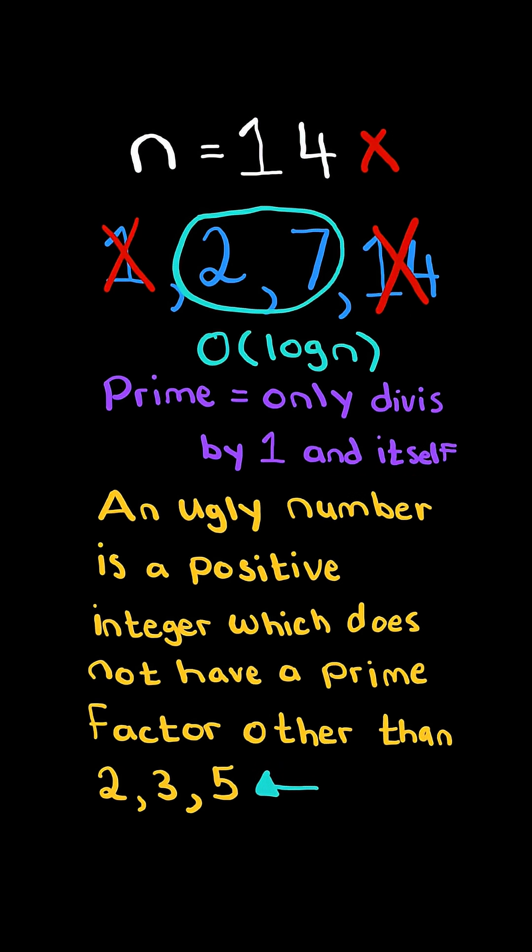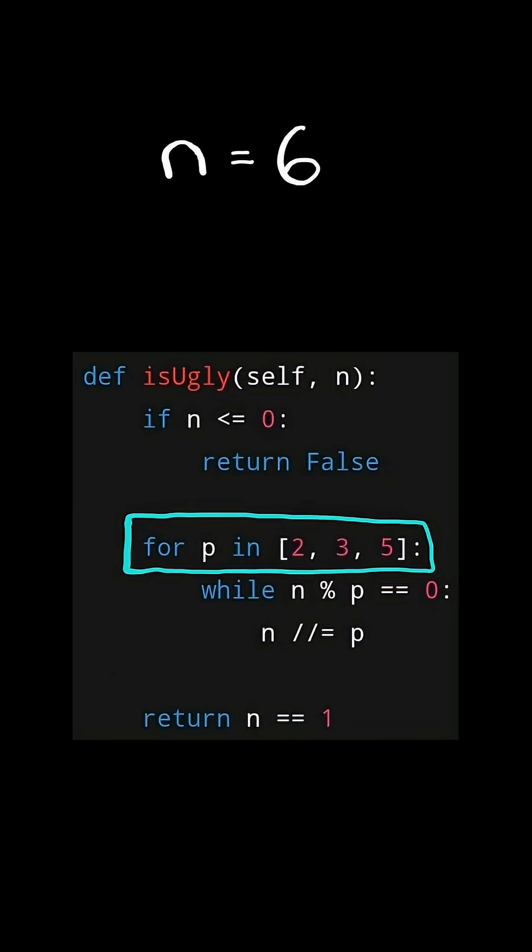We will solve this in O of log n time. We will first iterate through the prime factors of an ugly number which are 2, 3, and 5.